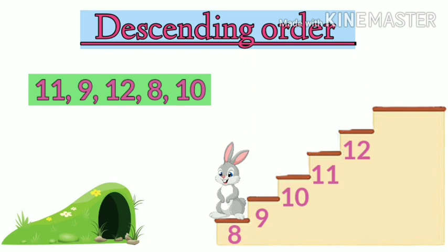So this is the descending pattern. Here, 12 is the biggest number and 8 is the smallest number.